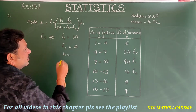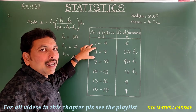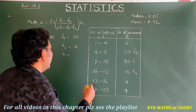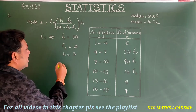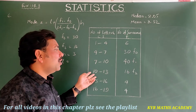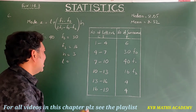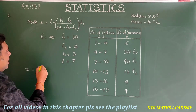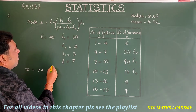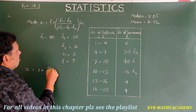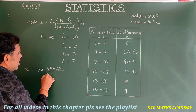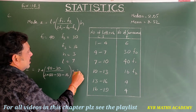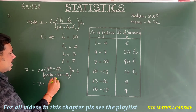H = size of the class = 3, and L = lower boundary of the modal class = 7. Substituting: Z = 7 + (40 − 30) / (2×40 − 30 − 16) × 3 = 7 + 10 / (80 − 46) × 3 = 7 + 10/34 × 3 = 7 + 30/34 = 7 + 15/17.